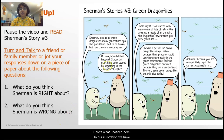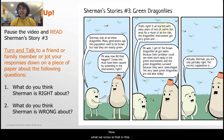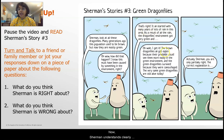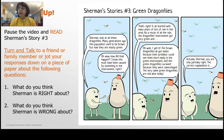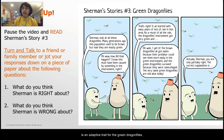Here's what I notice here. In our illustration, we have green dragonflies and brown dragonflies. What we know is that in this environment, many years of lots of rain caused the environment to become very lush and green. Sherman understands clearly that the brown dragonflies all got eaten because their present predator could see them more easily in the green environment. And he understands that green, therefore, is an adaptive trait for the green dragonflies.